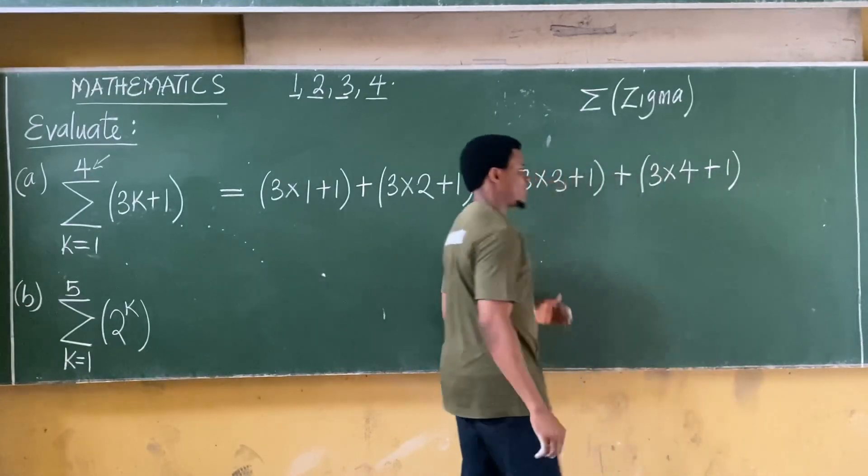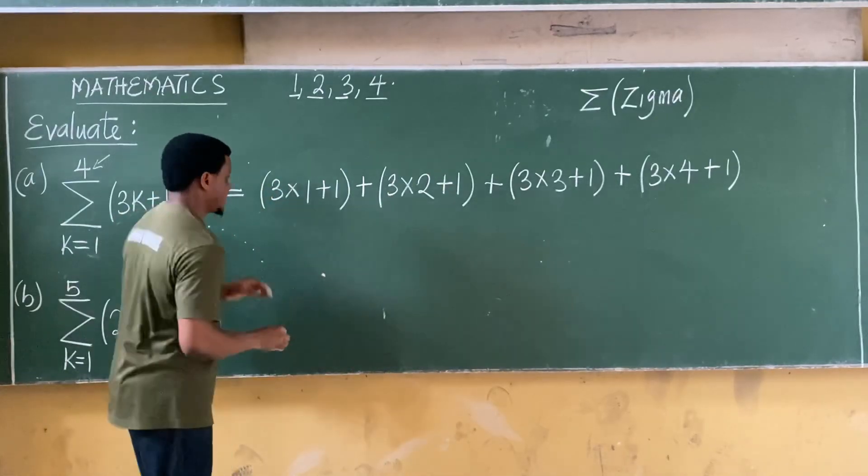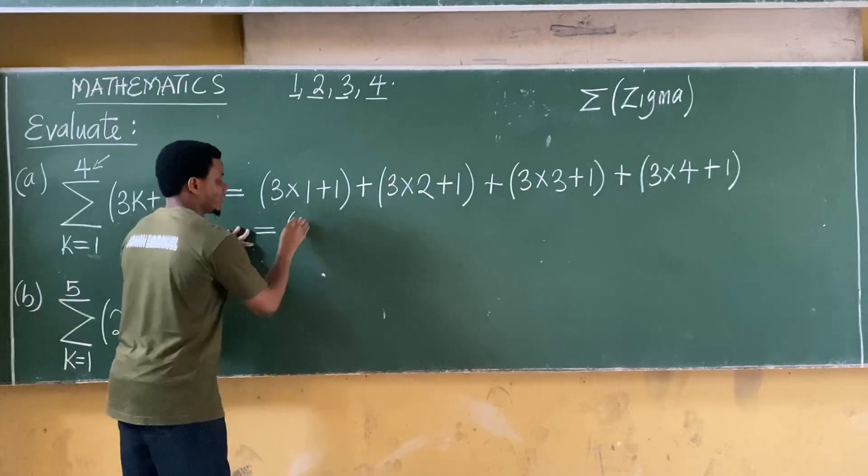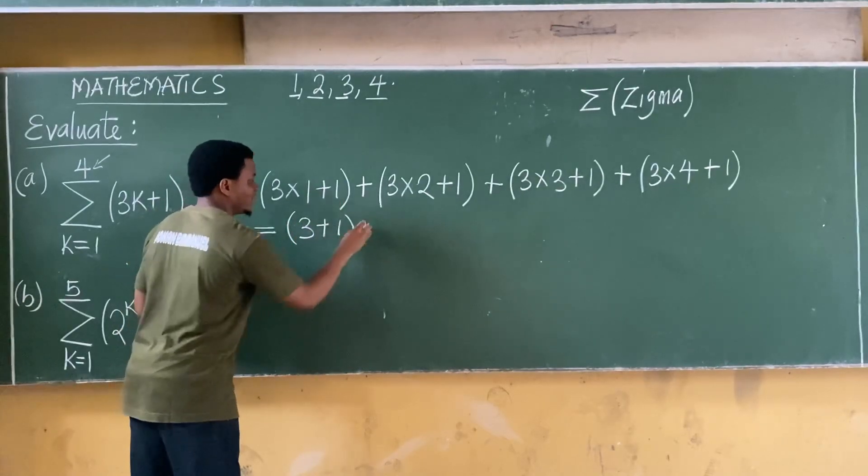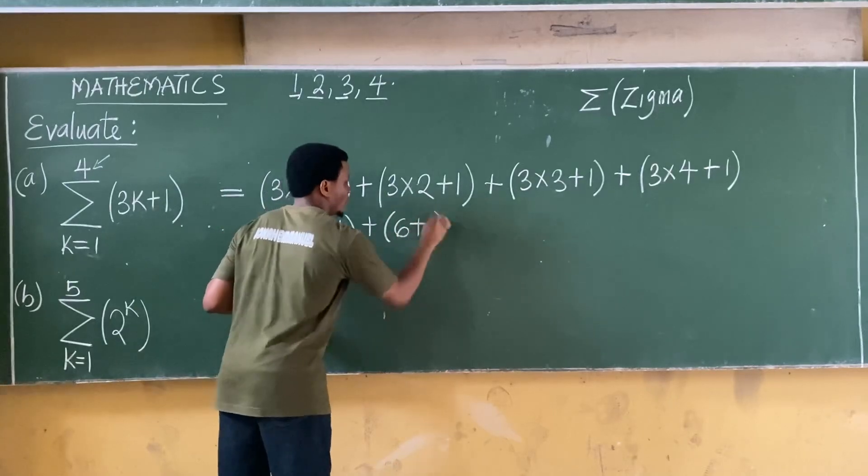Basically this is how this is done. My task now: simplify this. Simplifying this is equal to three times one is three, plus one, so plus one, plus three times two is six plus one.